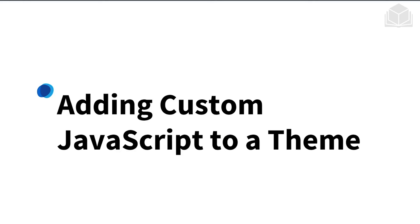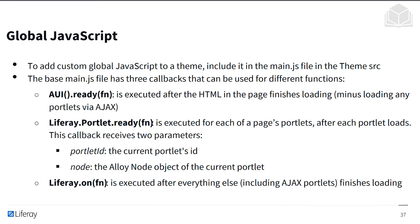Now we'll talk about adding custom JavaScript to a theme, starting with global JavaScript. To add custom global JavaScript to a theme, you'll include it in the main.js file in the theme source directory. The base main.js file has three callbacks that can be used for different functions.